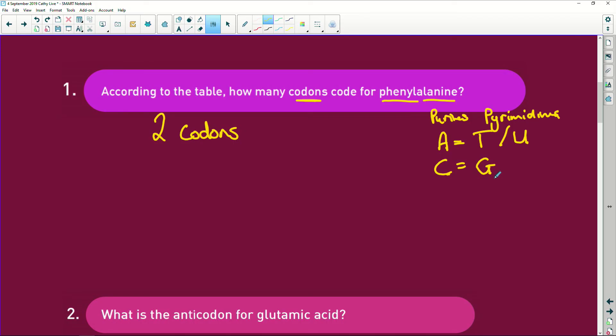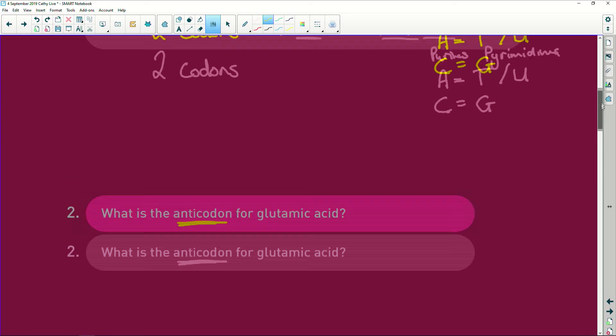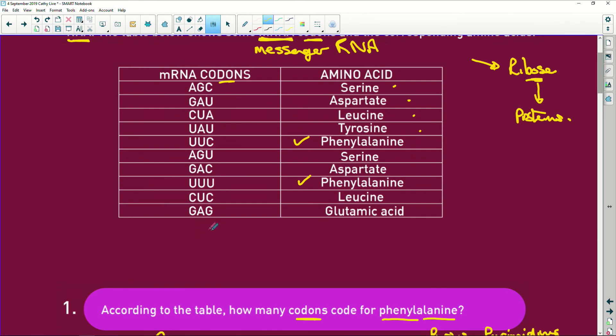So what is the anticodon of glutamic acid? If we look here, the anticodon is good for glutamic acid.